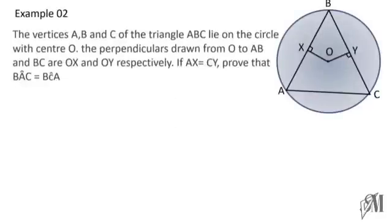The second example tells us the vertices A, B, C of a triangle ABC lie on a circle with center O, and OX and OY are perpendicular to the sides. It is given that AX is equal to CY, and we have to prove that angle BAC is equal to angle BCA.